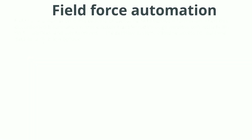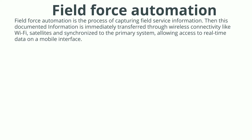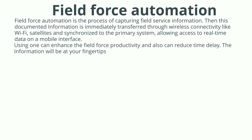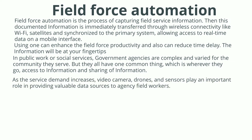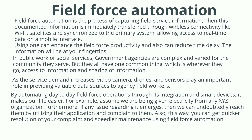Field force automation is the process of capturing field service information, which is immediately transferred through wireless connectivity like Wi-Fi and satellites, and synchronized to a primary system allowing real-time data access on a mobile interface. This enhances field force productivity and reduces time delay. In public work or social services, government agencies use video cameras, drones, and sensors to provide valuable data to field workers, and automating day-to-day field force operations through smart devices makes life easier.